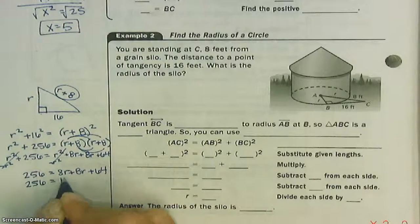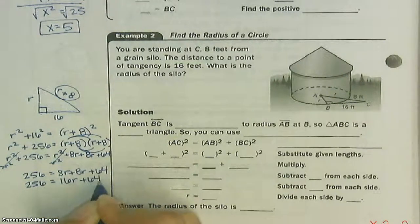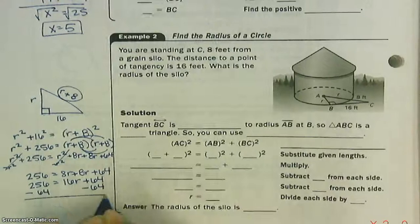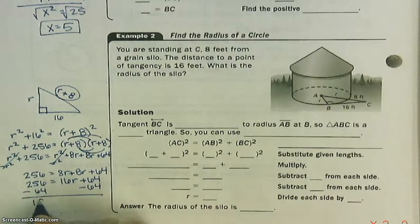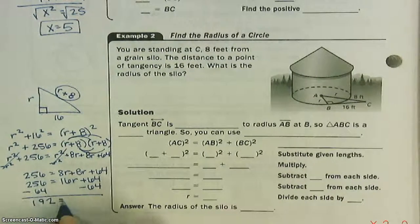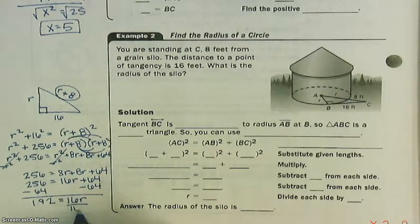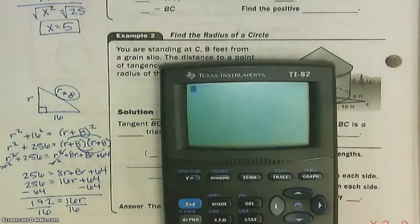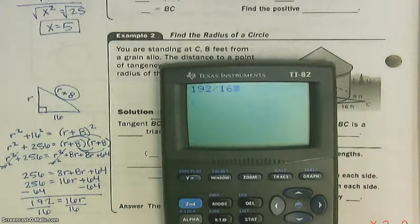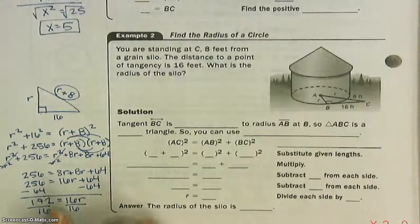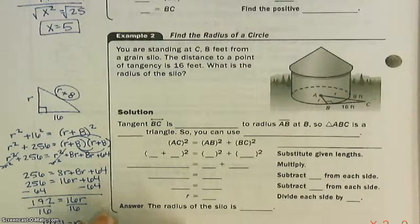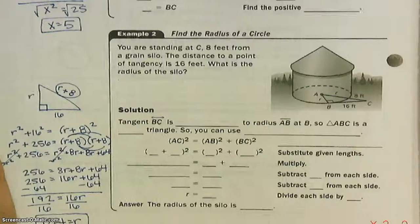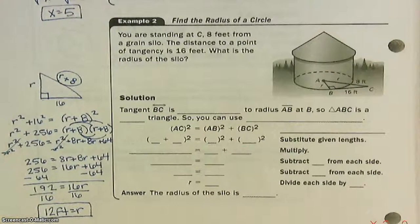That's 16 R's. Subtract 64 from both sides. I get 192 equals 16R. Divide by 16. 192 divided by 16 is 12. And our units here are feet.